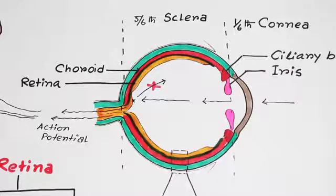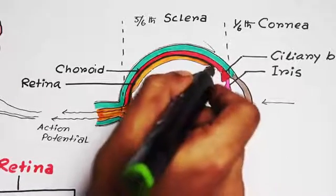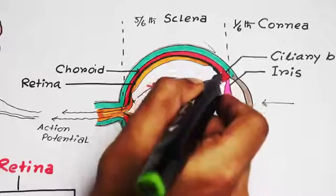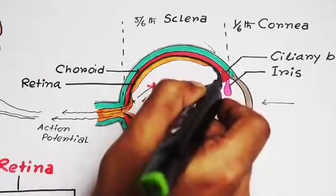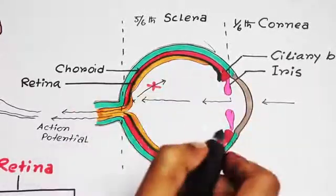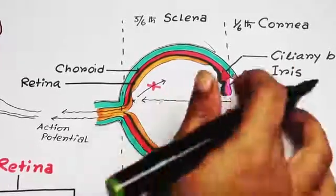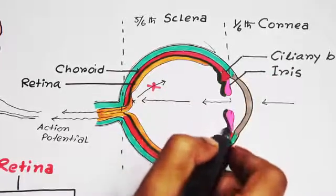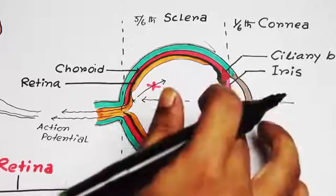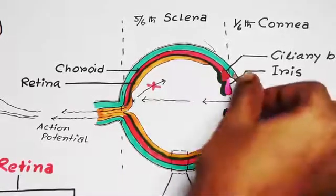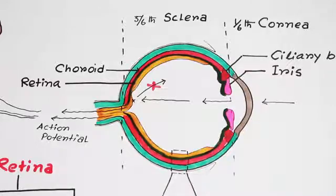Now, this pigmented layer covers all the choroid layer and extends forward just behind the ciliary body and then behind the iris, and finally stops here. It is not going beyond this area. So, it is actually absent in front of the iris.